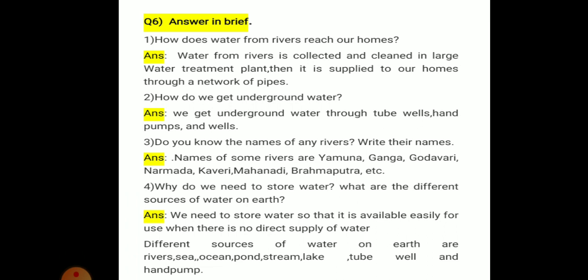Number 2: How do we get underground water? We get underground water through tube wells, hand pumps, and wells.